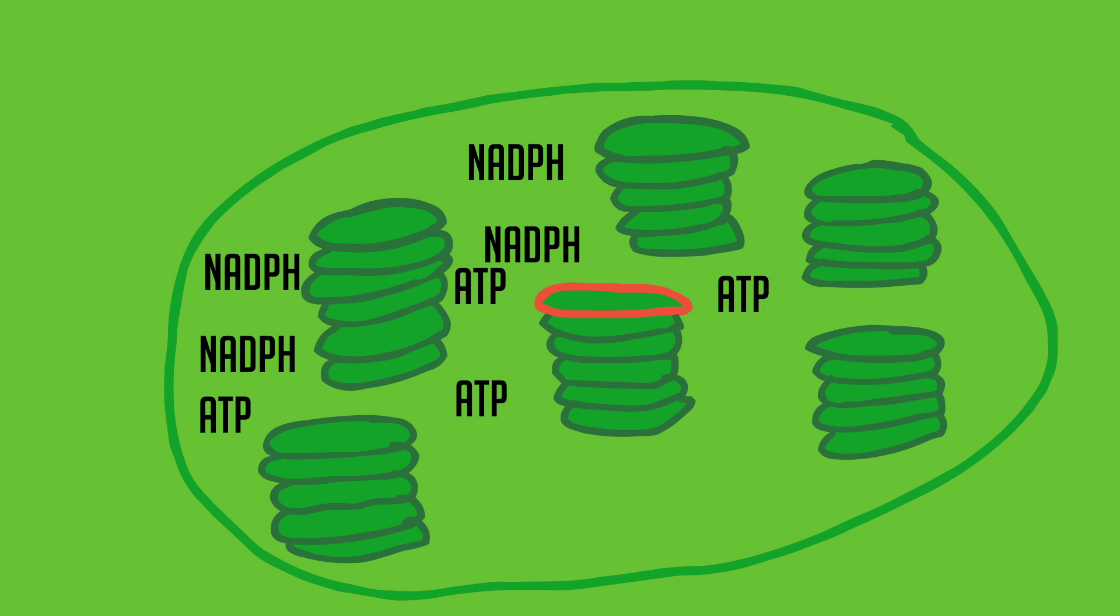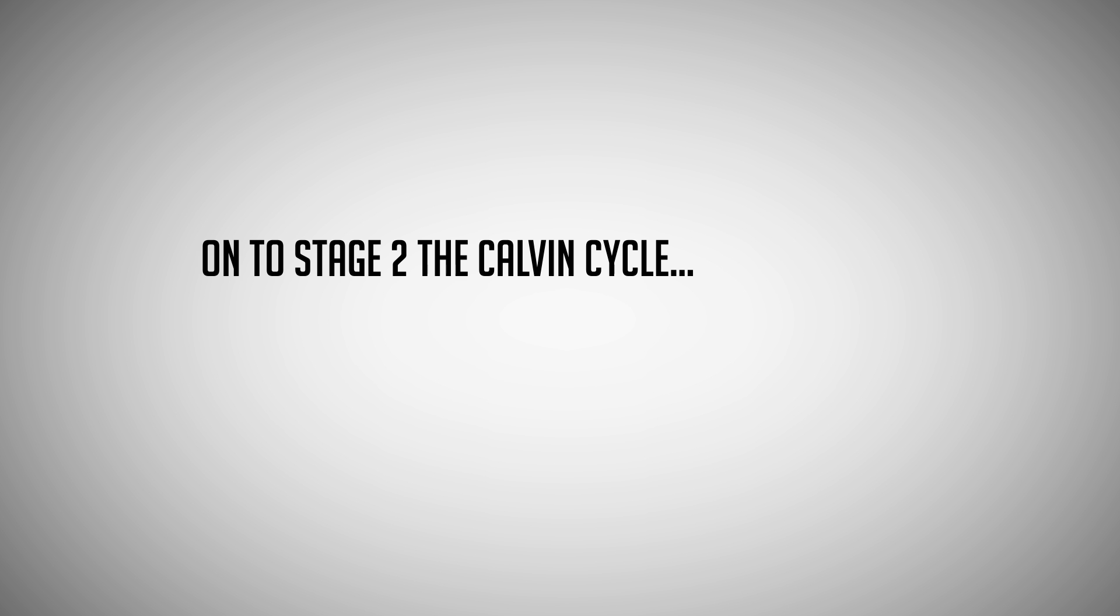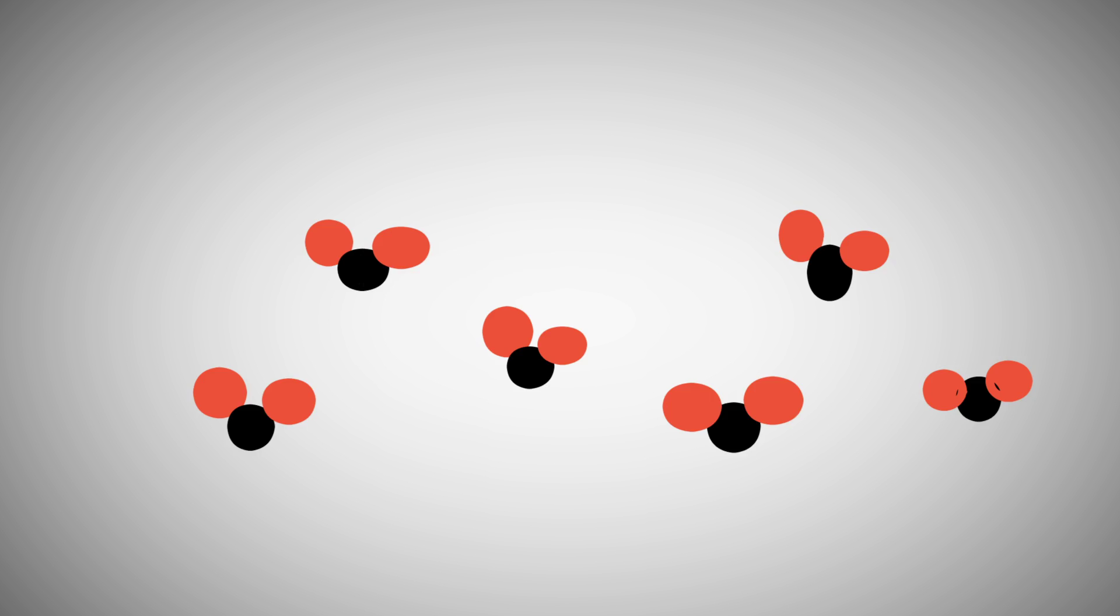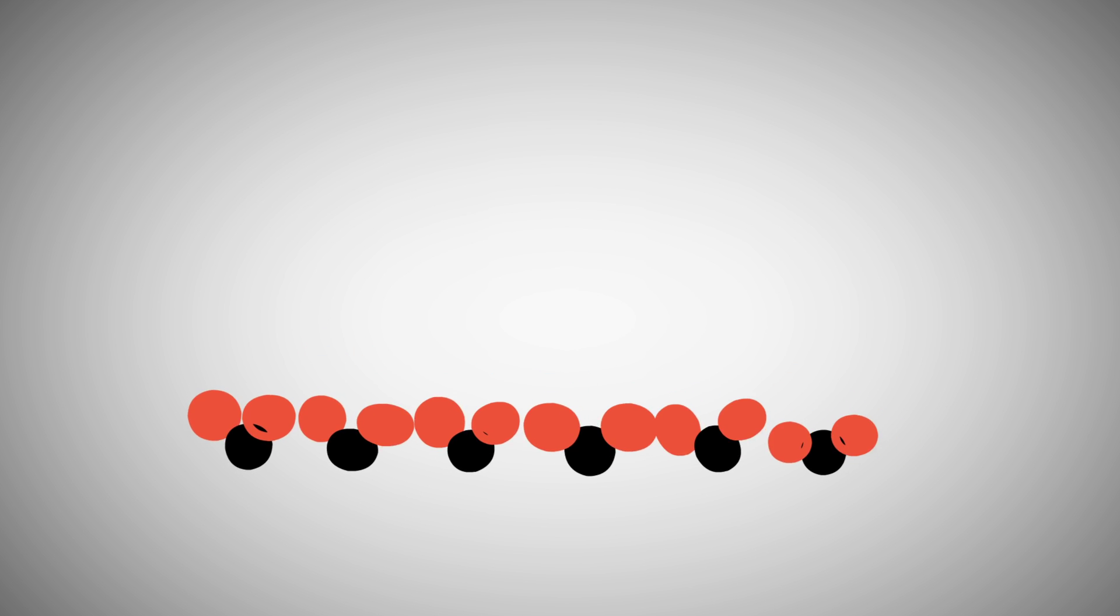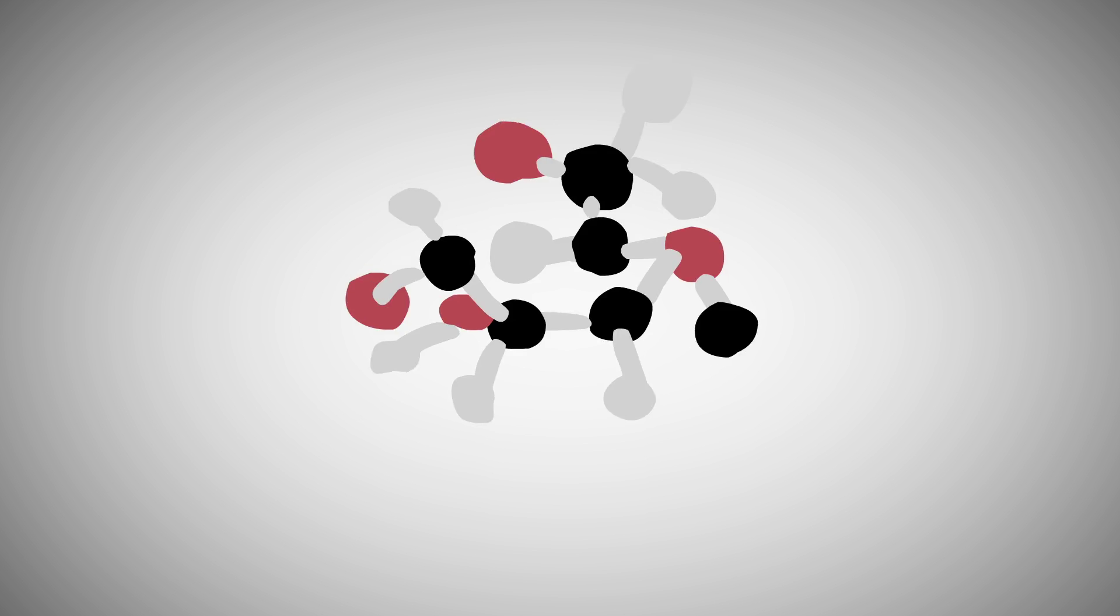This is where the Calvin Cycle happens. The CO2 from the atmosphere forms a chain of six carbons. The chemical NADPH, along with ATP, combines the CO2 with hydrogen, giving us the final molecule: 6O2 plus C6H12O6, carbohydrates.